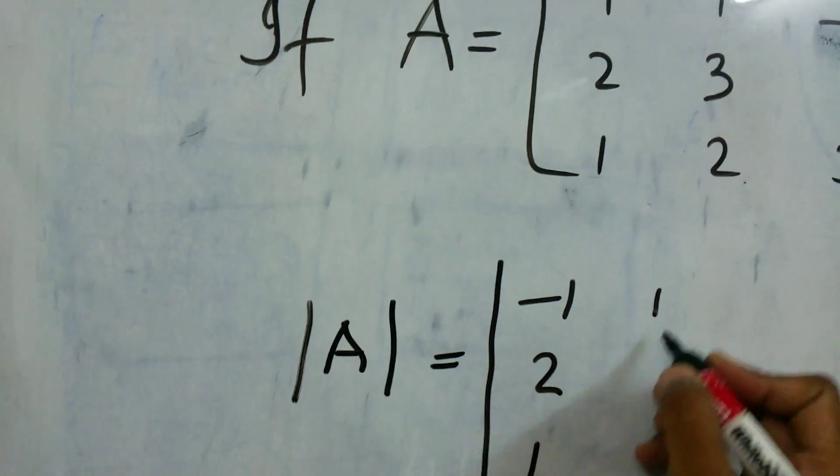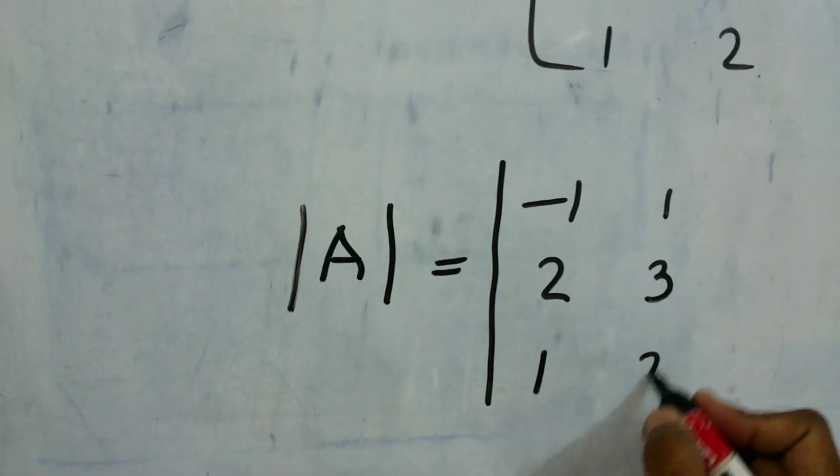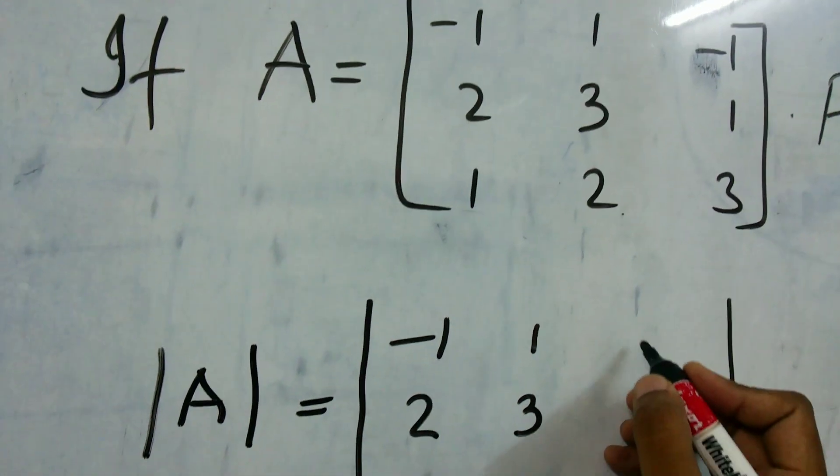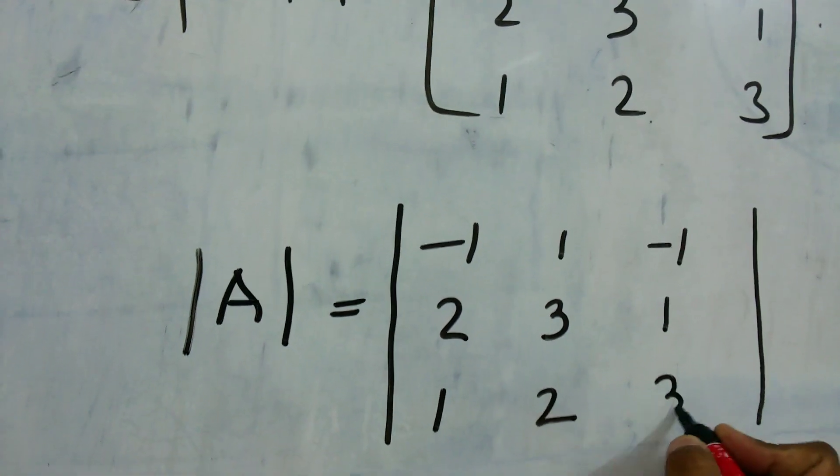So this is 1, 3, 2 and here it is minus 1, 1 and 3.